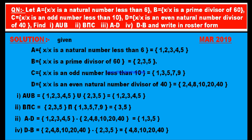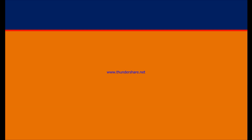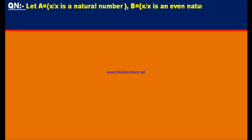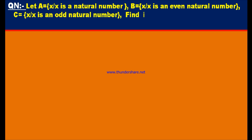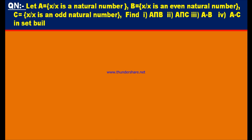Another question. Let A = {x | x is a natural number}, B = {x | x is an even natural number}, and C = {x | x is an odd natural number}. Find A intersection B, A intersection C, A minus B, and A minus C in set builder form.